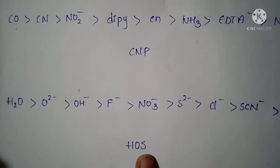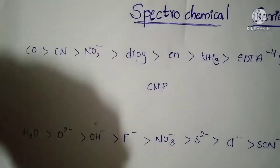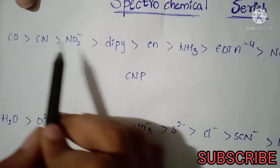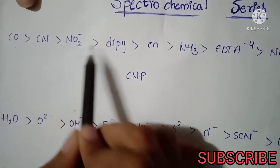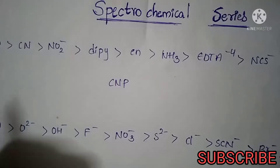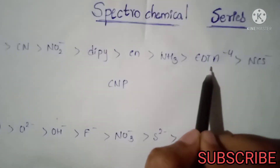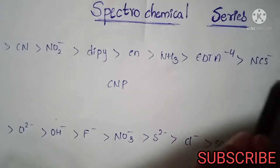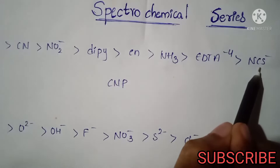I am going to show you the strong field ligands and weak field ligands. Let me show you how to do the energy and allow them to learn. The strong field ligands are first known as: CO, CN⁻, NO₂⁻, dipy, ammonia, EDTA, and NCS.